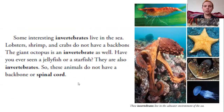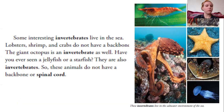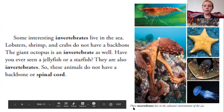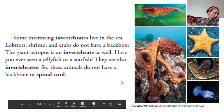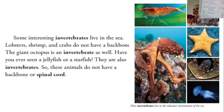Some interesting invertebrates live in the sea. Lobsters, shrimp, and crabs do not have a backbone. The giant octopus is an invertebrate as well. Have you ever seen a jellyfish or a starfish? They are also invertebrates. These animals do not have a backbone or a spinal cord, and their habitat is the saltwater environment of the sea, pretty different from those other insects we looked at. I'm going to add a little jellyfish to my drawing with the worm so I can remember there's another type of animal in a different environment that is an invertebrate.